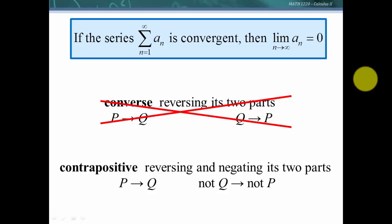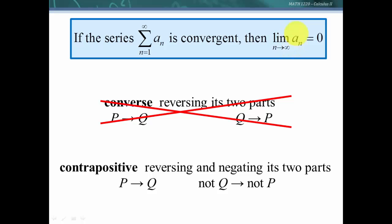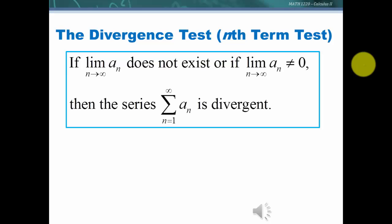Let's look at the contrapositive by reversing and negating both parts. If p then q becomes: if not q then not p. That says if the limit of the terms does not go to zero, then the series is not convergent — and that is true. The contrapositive is always true. This is called the divergence test, sometimes also called the divergence theorem or the nth term test.